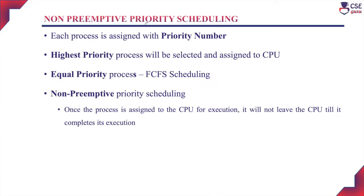We have already discussed about priority scheduling. When considering a process along with CPU time and arrival time, we assign some preference to each process to differentiate it from others, so that preferential processes are selected and assigned to the CPU for execution early. This preference may be in the form of CPU burst time or priority number. The preference based on CPU burst time is called the SJF algorithm. Here, priority is a priority number assigned to each process along with the CPU burst time, and based on that number the process is selected for execution.